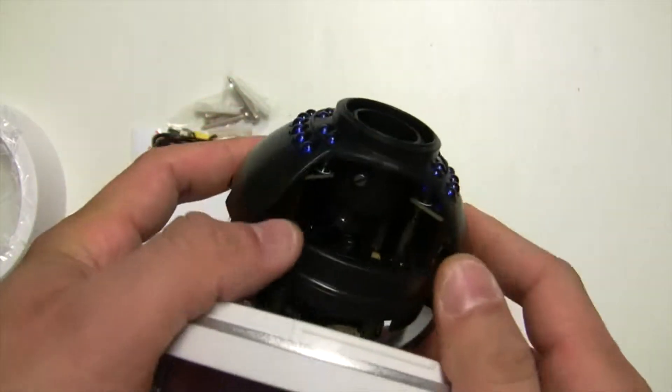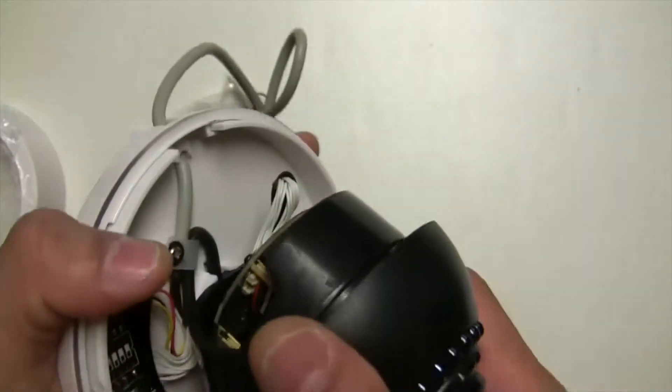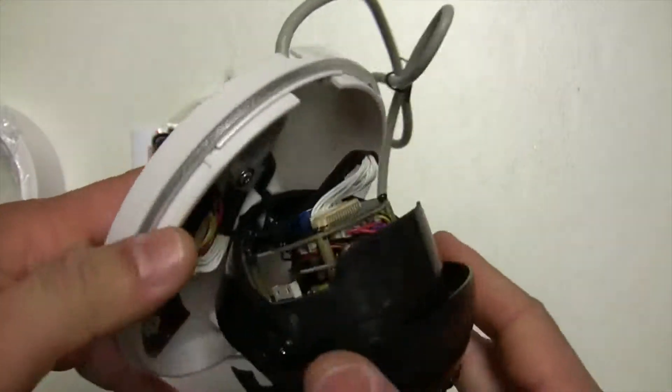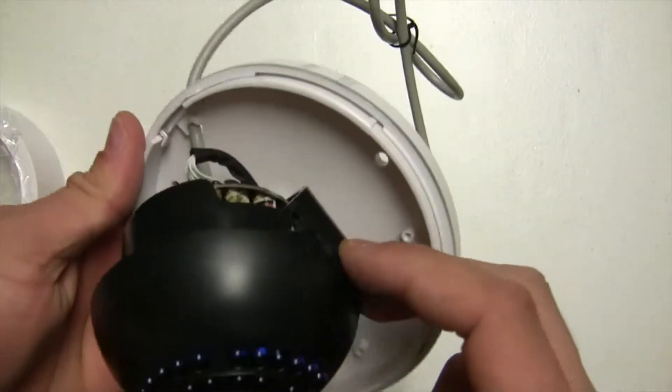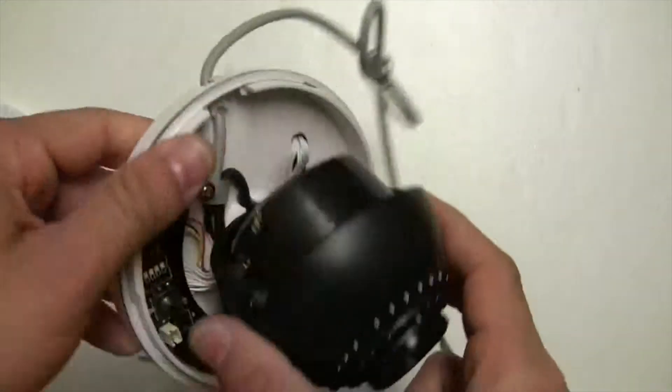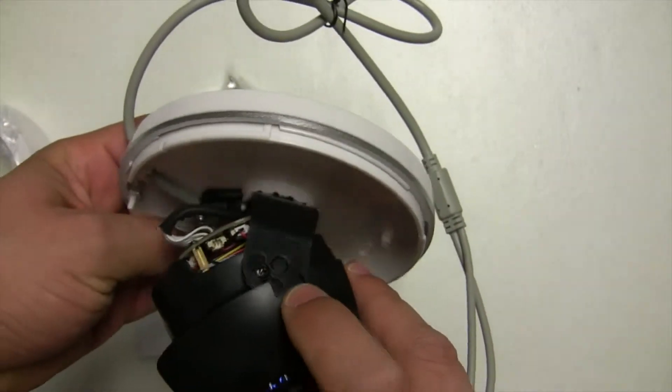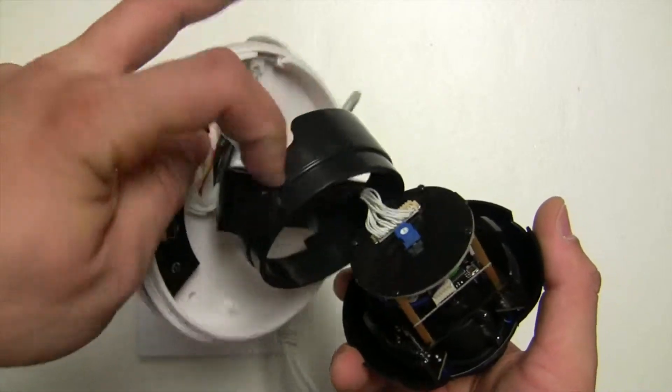And right here you can see the knobs for you to adjust the zoom and focus. And to access the smart dial, you can either unscrew these screws right here on the side so the camera can move up and down, or you can apply pressure just right here on this side and this side and then pull it off right here. And then you can access the smart dial.